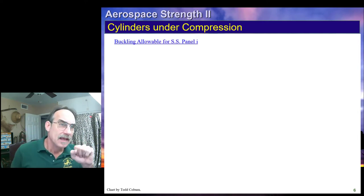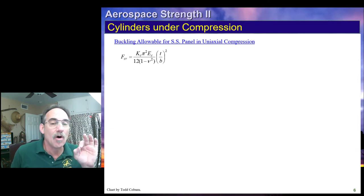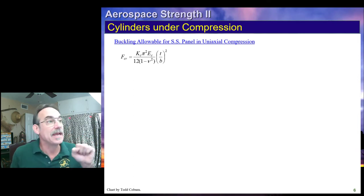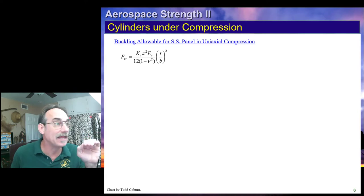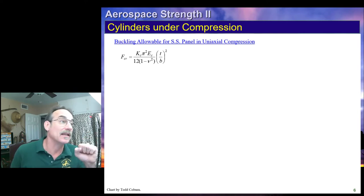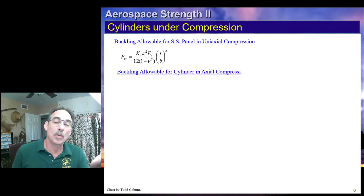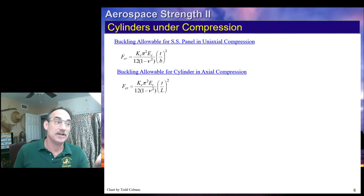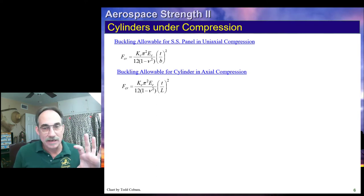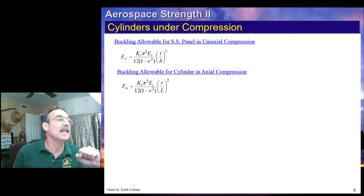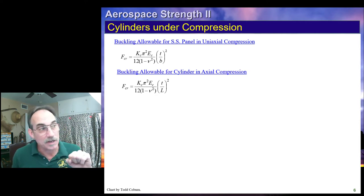We're going to follow almost the same idea as we had for flat plates. For flat plates, we had an equation for the buckling allowable where we needed the coefficient and were careful about our B dimension — whether it was the length or the loaded edge. For a cylinder, we use a similar equation. We'll need a buckling coefficient, and we'll use the length as the characteristic dimension along with the thickness.